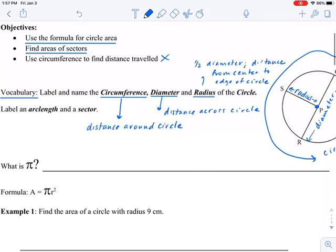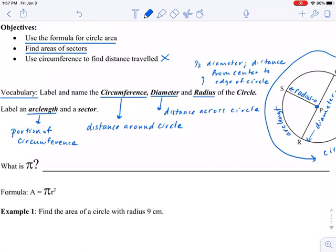And then a radius goes from the center to the edge. A couple more terms: arc length. An arc length is a portion of the circumference. So I'll label an arc length here. SR arc SR is an arc length.